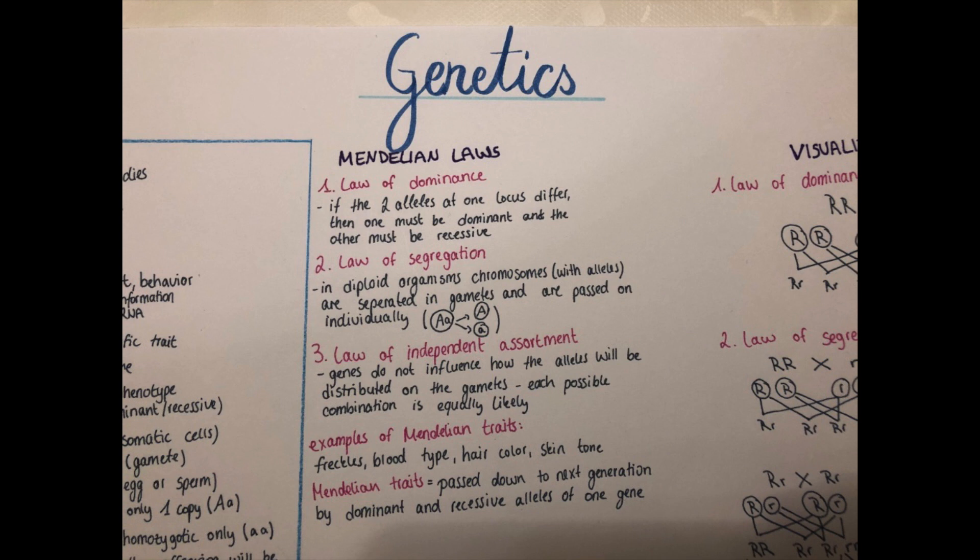The second law is the law of segregation. So in diploid organisms, meaning they have two copies of each chromosome, and on the chromosomes are the alleles, so they also have always two copies of each allele. Those are separated in the gametes and those are passed on individually.